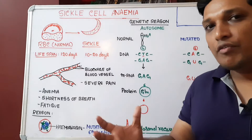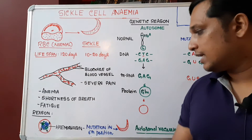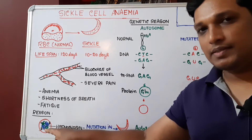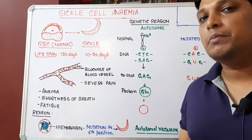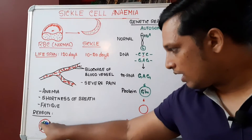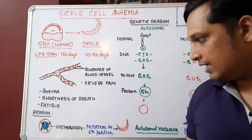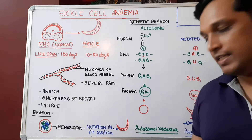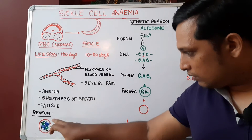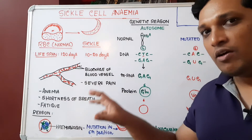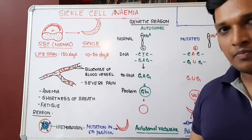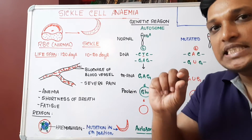What is the reason for the change from disc-shaped RBC to sickle shape? Inside a normal RBC, there is an oxygen-carrying protein pigment called hemoglobin. Hemoglobin has two alpha chains (shown in green) and two beta chains (shown in blue). In the beta chain of the hemoglobin protein, a mutation occurs at the sixth position.